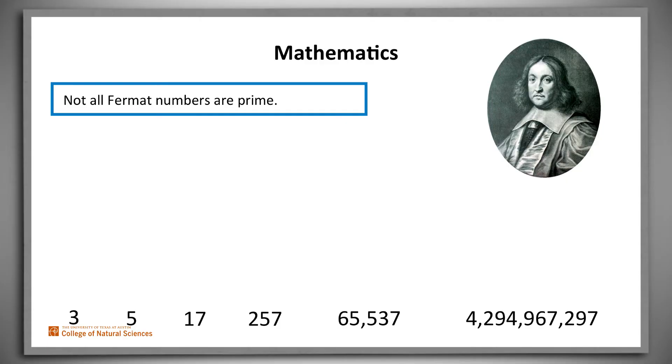Assume that we have defined the predicates FermatNum and prime appropriately. Then we can encode this claim in logic like this: It's not true that if x is a Fermat number, then x is necessarily prime.